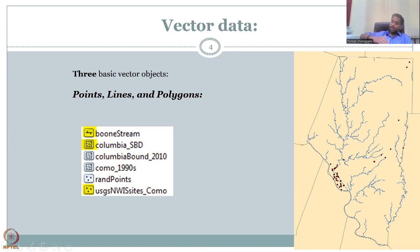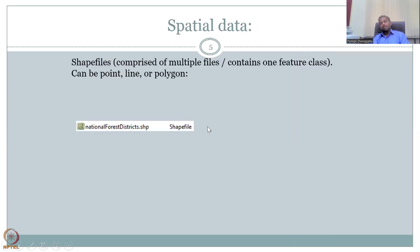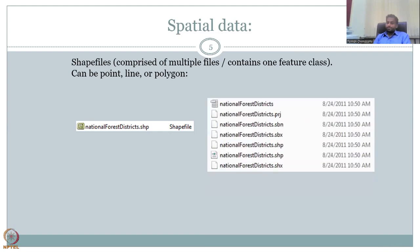Each shapefile has its own attribute, which we'll see soon. When you download a shapefile — here I'm using forest data as per districts — shapefiles are not single files by themselves. They are comprised of multiple files and may have multiple feature classes. But more importantly, each shapefile has six to seven associated files. Here this National Forest District shapefile has seven associated files, and you can see the naming is the same — only the extension changes.